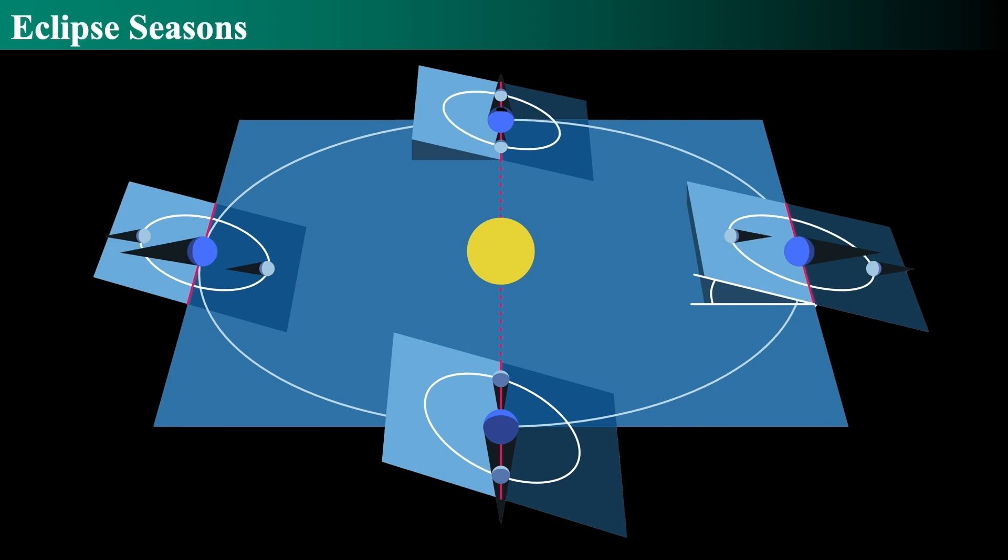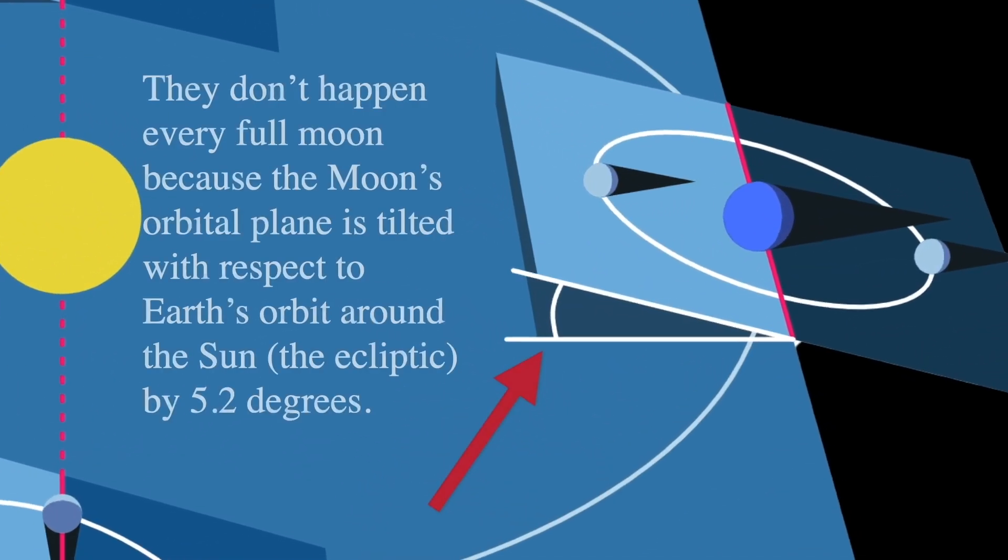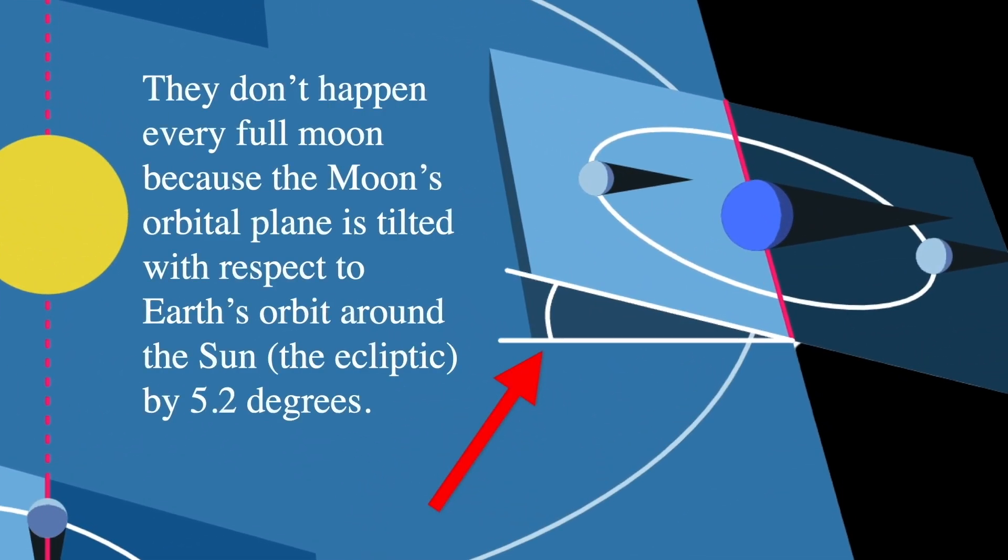Because of this tilt of the moon's orbit with respect to the Earth's orbit around the Sun, they simply don't happen every month because of that tilt. And the ecliptic is the path that's the big blue area, but the tilt is the tilt of the moon's orbit. So at this time in the moon's orbit, there will be no way at any time for there to be a lunar eclipse because the line of nodes does not point at the Sun.